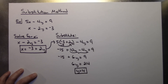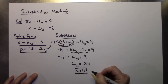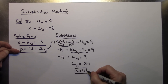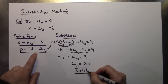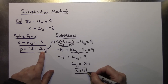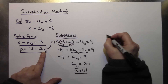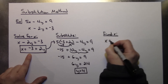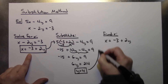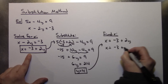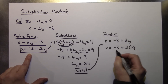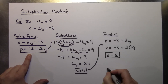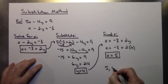This time I ended up finding y first — it really doesn't matter which one you find first. Now I'll plug y equals 4 back in. Since the equation x equals negative 3 plus 2y is already solved for x, it's easiest to use that. So x equals negative 3 plus 2 times 4, which is negative 3 plus 8, so x equals 5. The final answer is written as the ordered pair (5, 4).